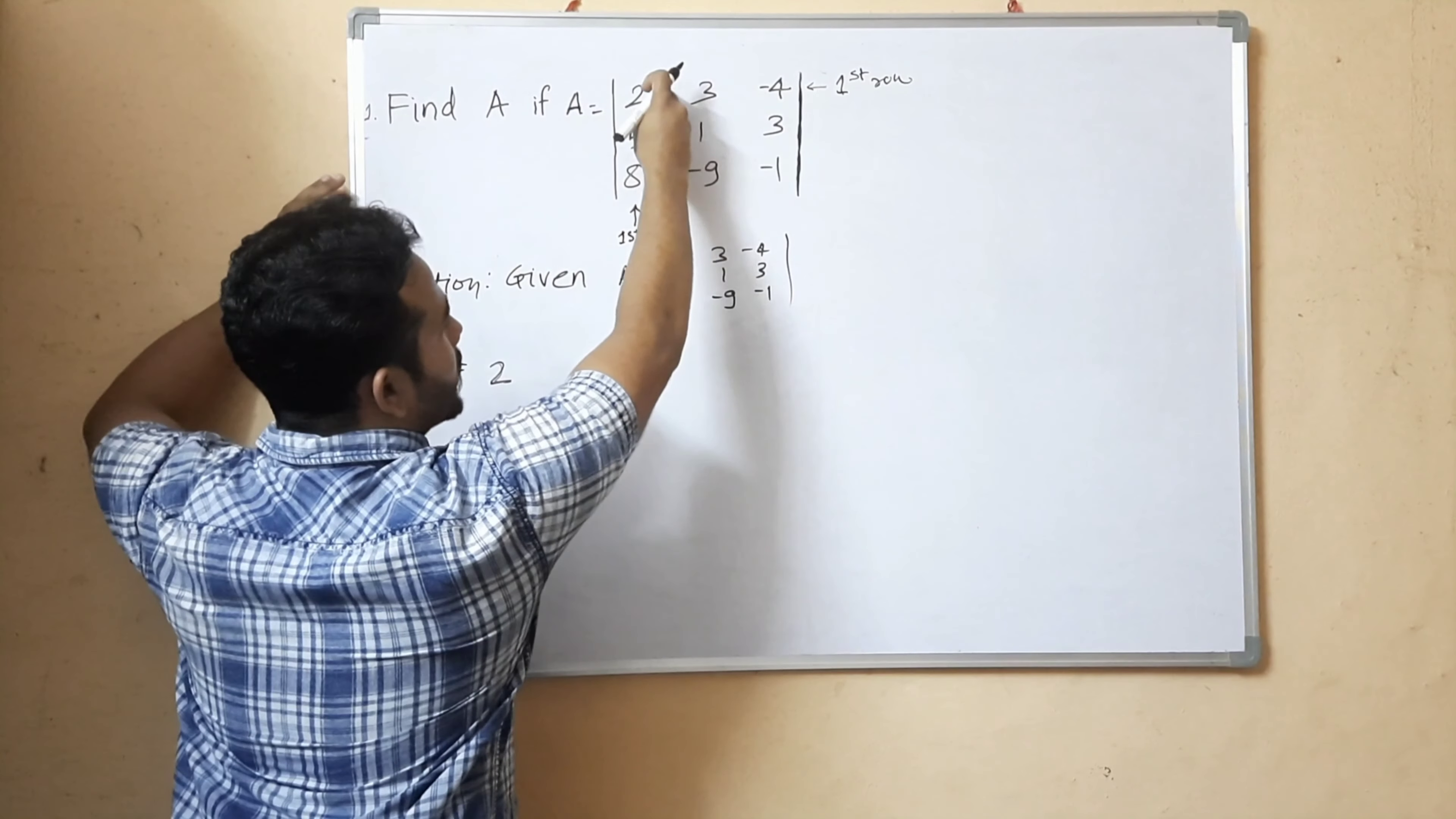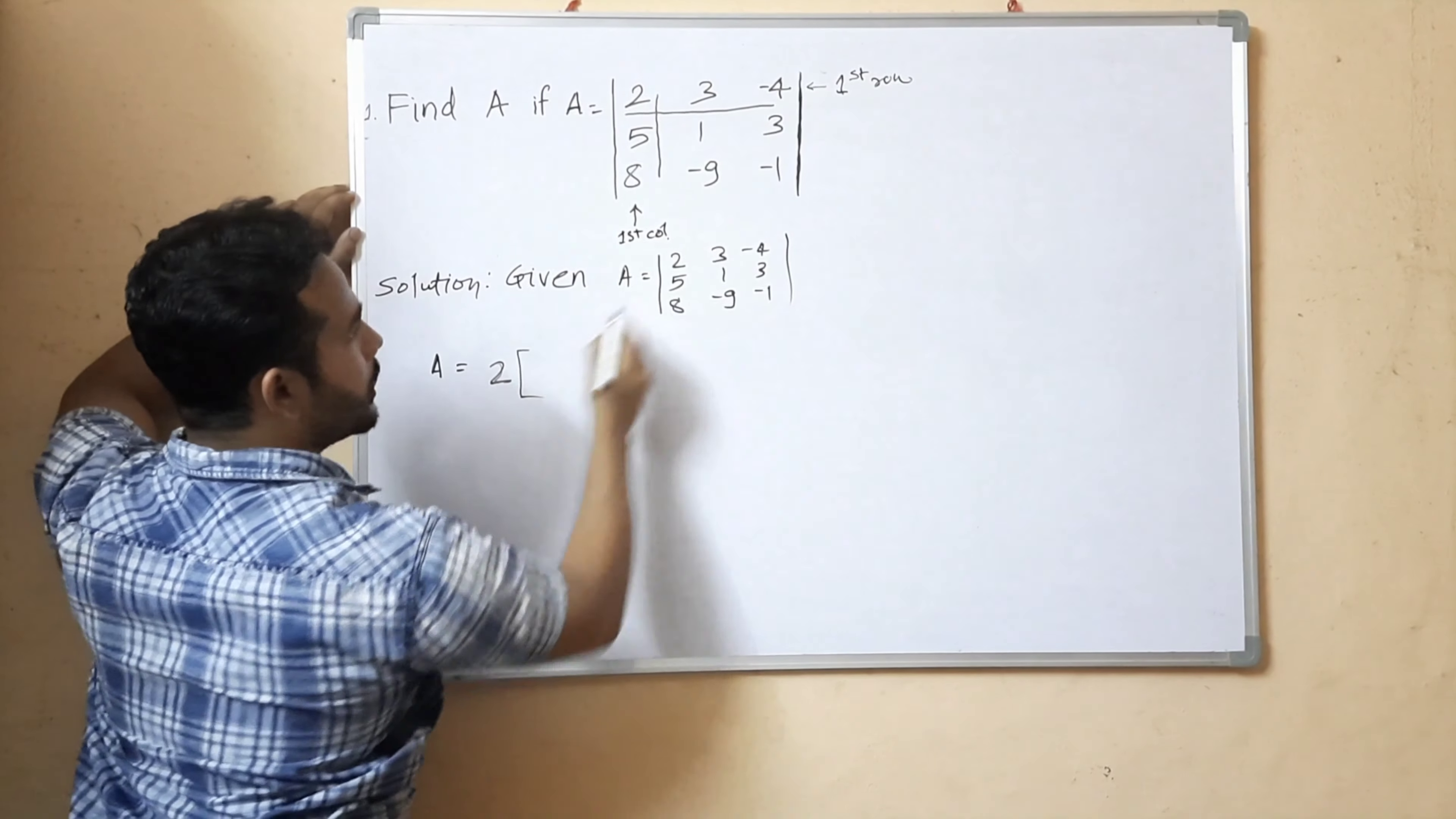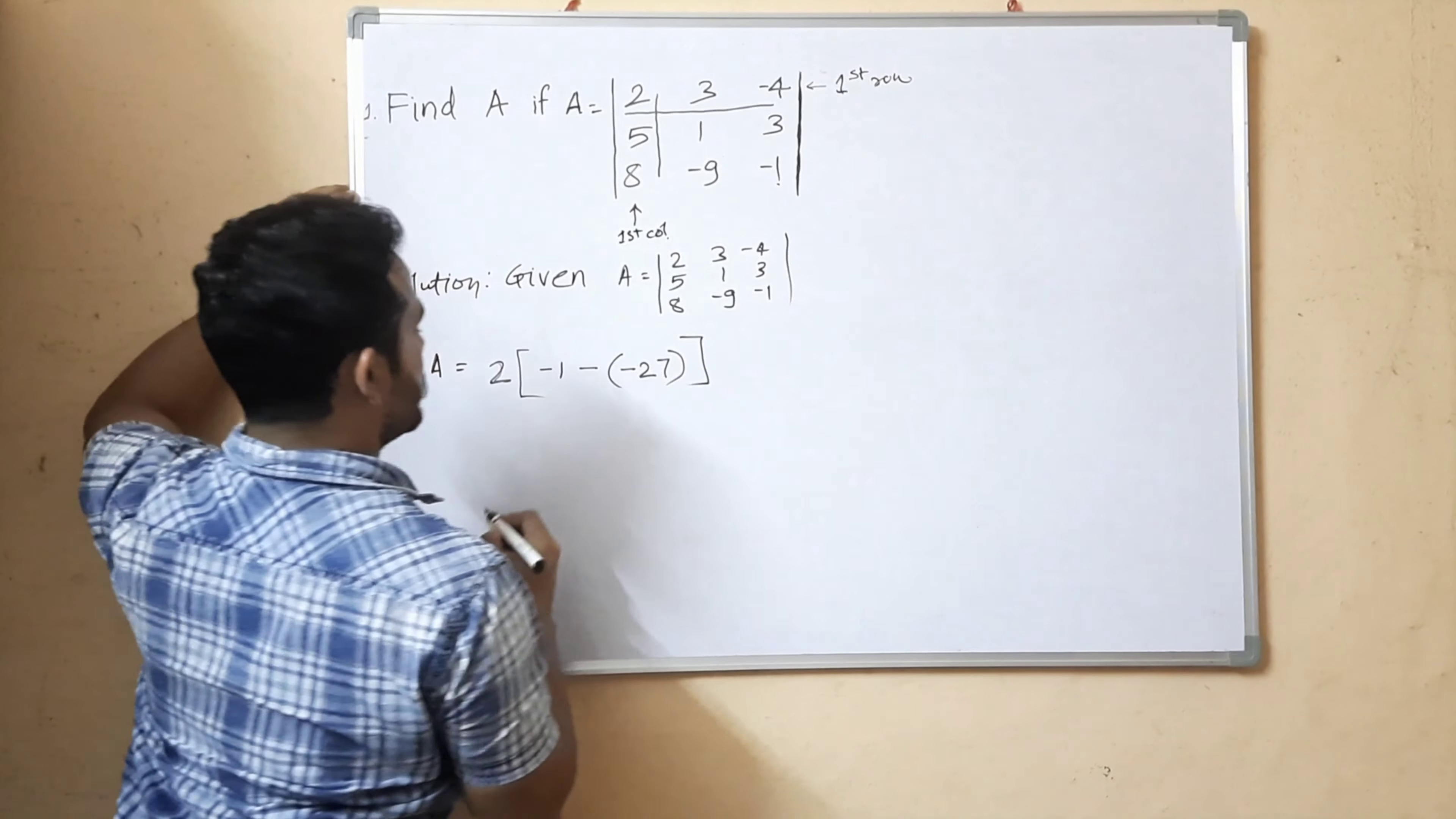We take the first element which is 2. We ignore its row and column, leaving the determinant: 1, 3, minus 9, minus 1. So we have 2 times [minus 1 times 1 minus minus 9 times 3], which equals 2 times [minus 1 minus minus 27], which is 2 times [minus 1 plus 27].